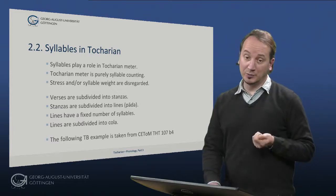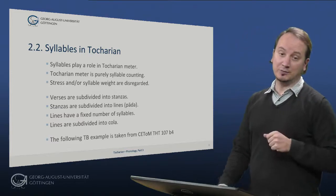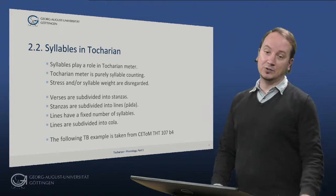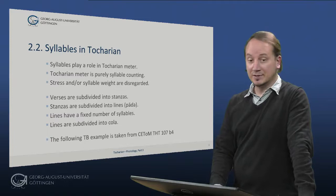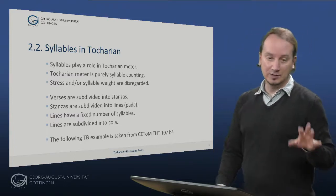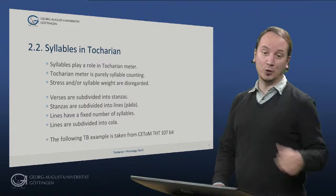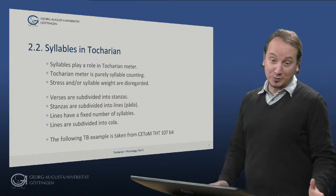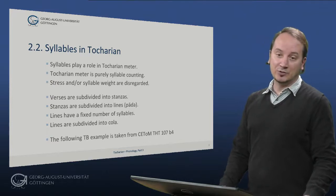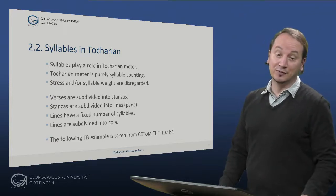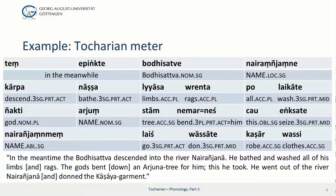So the following example that we will see is taken from Tocharian B. However, Tocharian A and Tocharian B are not differing when it comes to meter. This is an example taken from KTOM THT107 and the line will be B4. And you already know what KTOM and THT stand for: the online edition of Tocharian manuscripts and the manuscript from the collection of the Turfansammlung. THT107 is one of a very few complete pages of a manuscript. You can go and check the photo of the manuscript out online on KTOM.